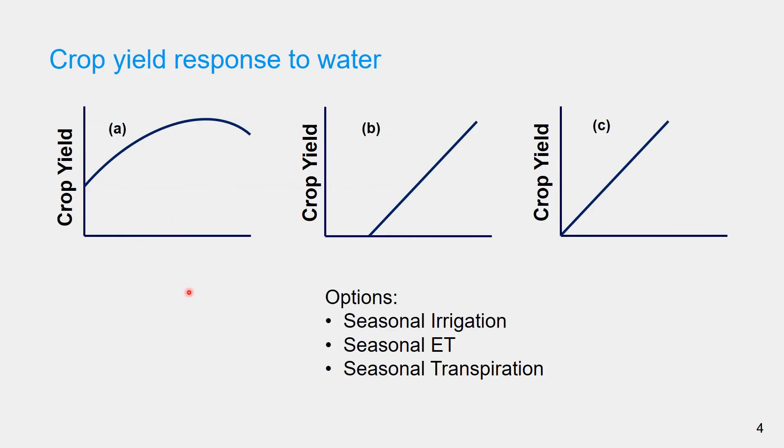Under optimal conditions, the graph of crop yield response to water has different shapes. This depends on the variable in the x-axis. The variable in the x-axis is related to water uses which can be seasonal irrigation, seasonal evapotranspiration, or seasonal transpiration.